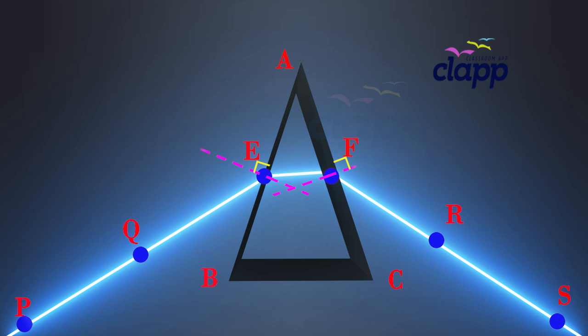Draw perpendiculars to the refracting surfaces AB and AC of the prism at points E and F, respectively. Mark the angle of incidence, angle i, the angle of refraction, angle r, and the angle of emergence, angle e.